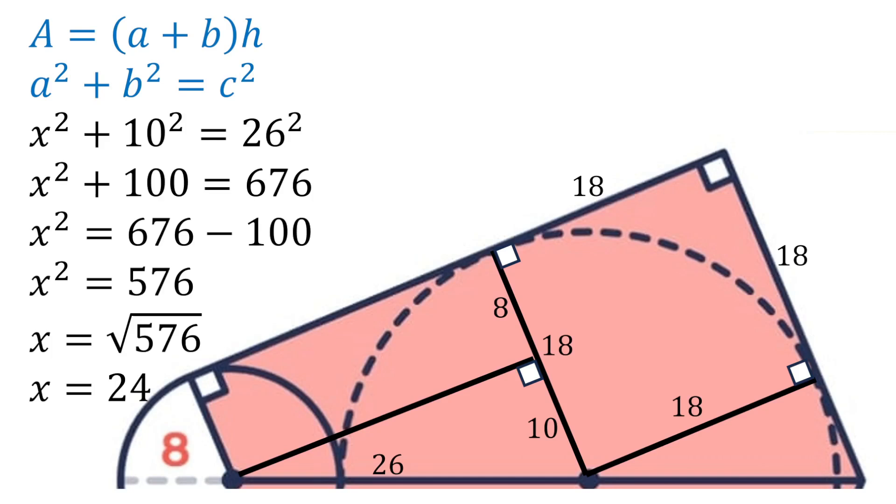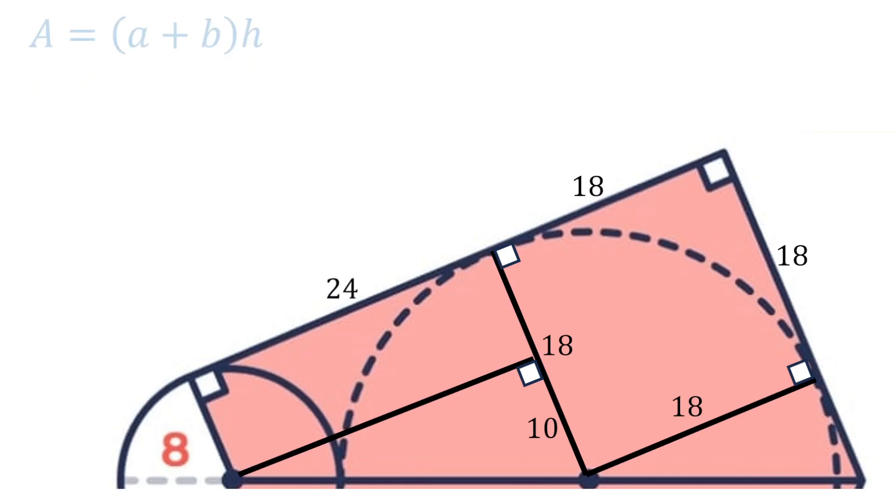So we can replace that x with 24, and that 24 will also be the same there. So the perpendicular distance h will be 24 plus 18. We have h is 24 plus 18. We know a is 8 because that's just the radius of the small circle.